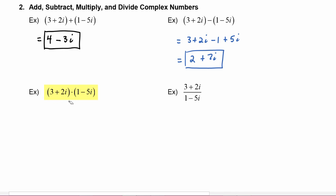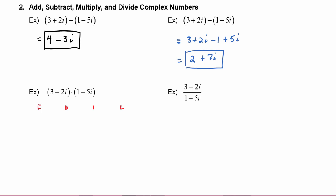In this next example we will multiply (3 + 2i) times (1 - 5i). In order to accomplish this we are going to use FOIL for multiplying binomials. This becomes: first times first is 3, outer times outer is minus 15i, inner times inner is plus 2i, and last times last is minus 10i².